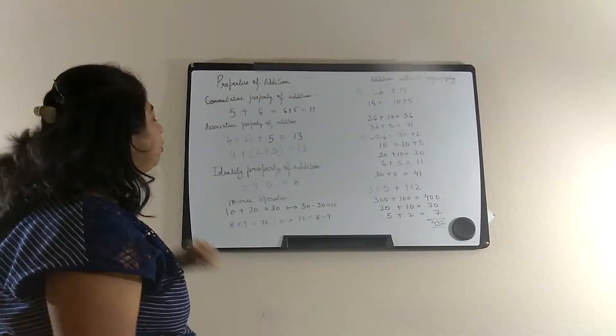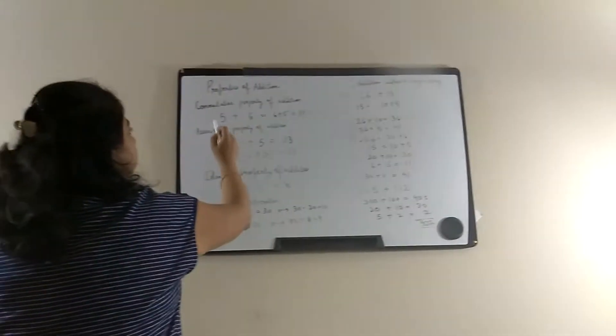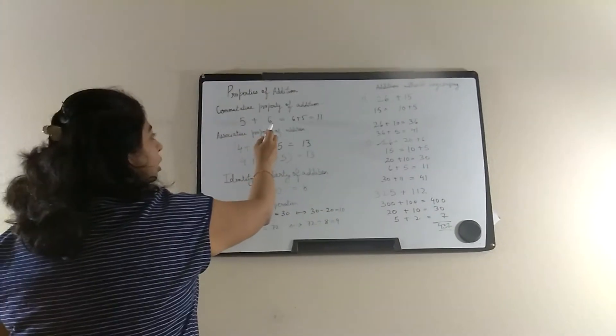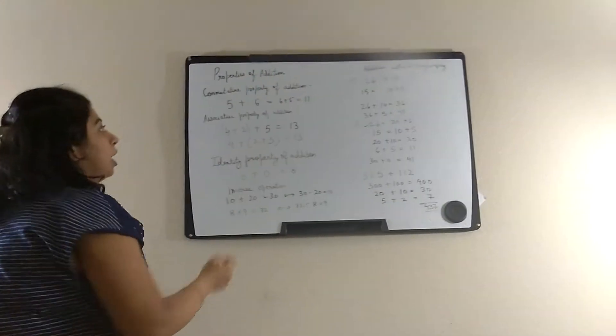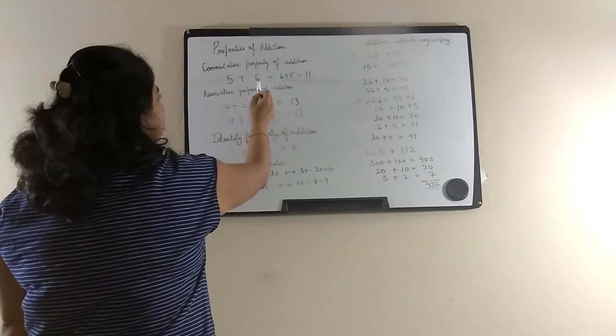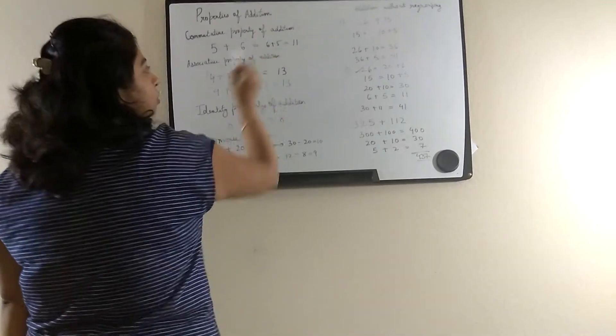What is the commutative property of addition? Commutative property of addition is if we change the order of the numbers, then also the sum remains the same. Like 5 plus 6 is 11 and 6 plus 5 is also 11.